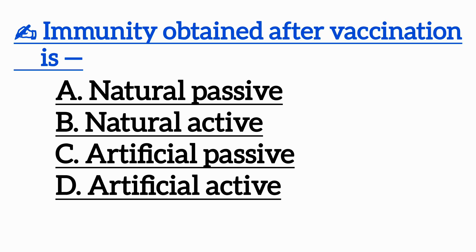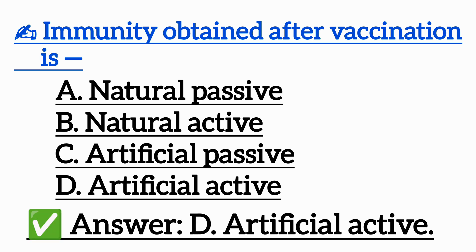Question 5: Immunity obtained after vaccination is — Option A: Natural passive, Option B: Natural active, Option C: Artificial passive, Option D: Artificial active. Correct answer is Option D: Artificial active.